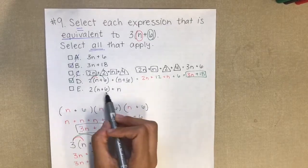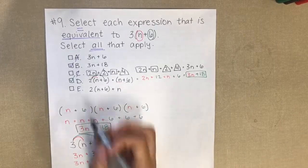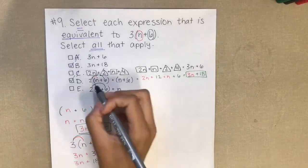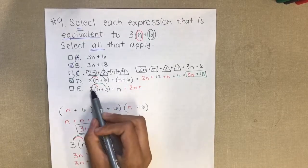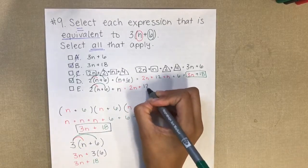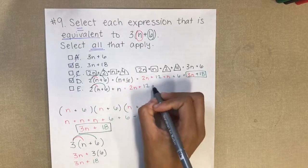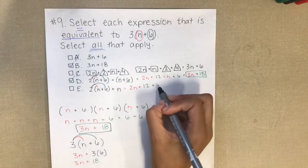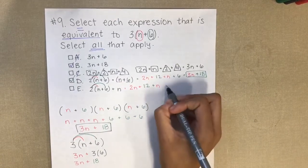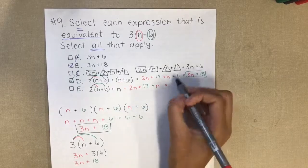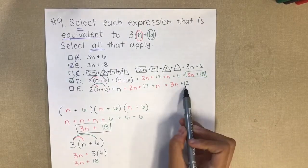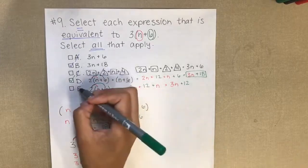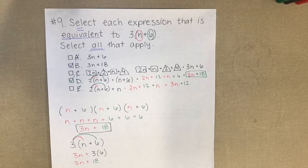For the last answer choice, it's another distributive property problem — same process as before. 2 times n is 2n, and 2 times 6 is 12, plus 1n. Combining like terms: 2n plus 1n is 3n, plus 12. Since 12 and 18 are not the same, this expression is not equivalent. So my final answers are answer choice B and answer choice D.